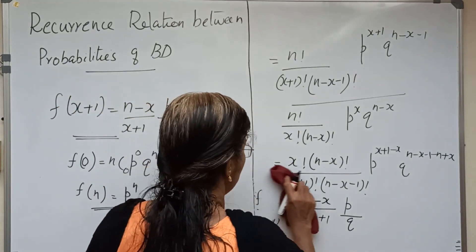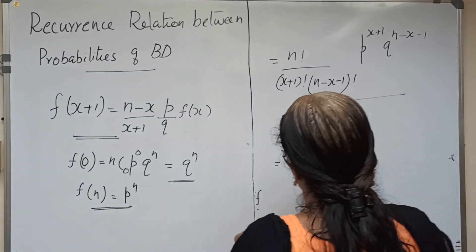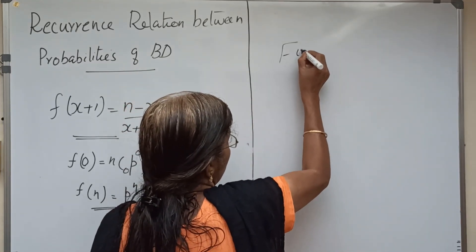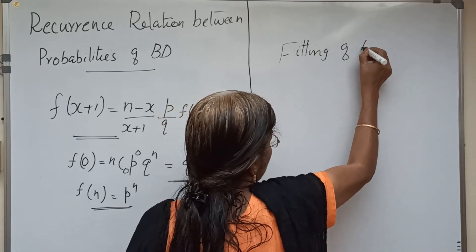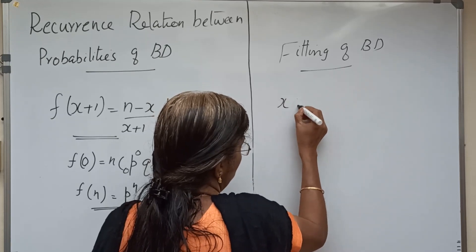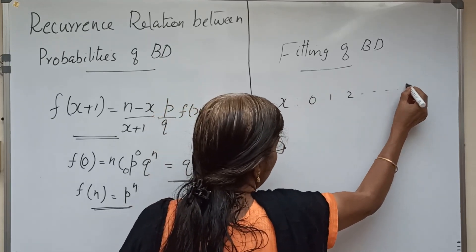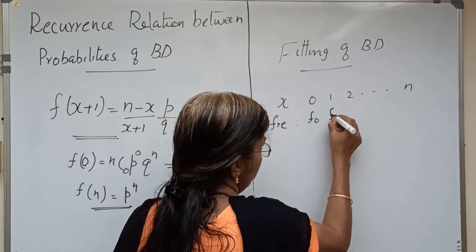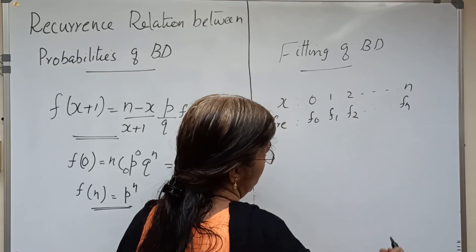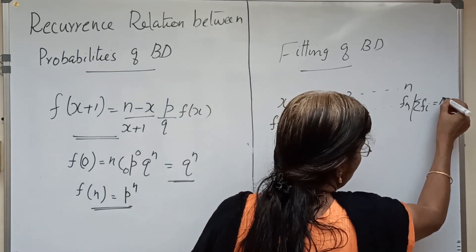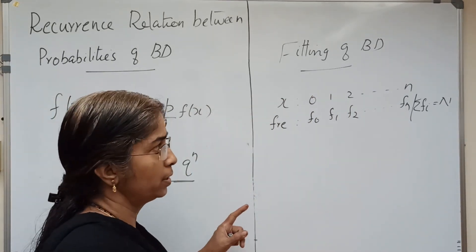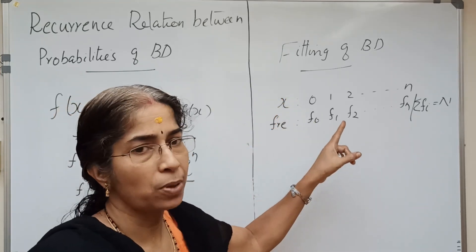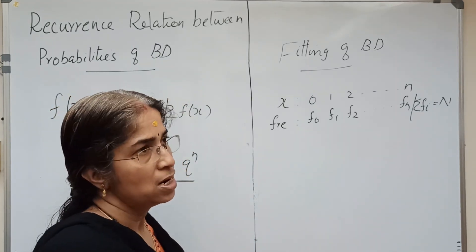This recurrence relation is applied in fitting of binomial distribution. Fitting of binomial distribution means: we are given a frequency distribution where x takes values 0, 1, up to n, with corresponding frequencies f0, f1, f2, up to fn, such that the total frequency sigma fi equals capital N. By fitting of binomial distribution, we replace these observed frequencies by the binomial expected frequencies.